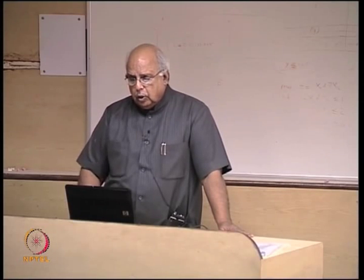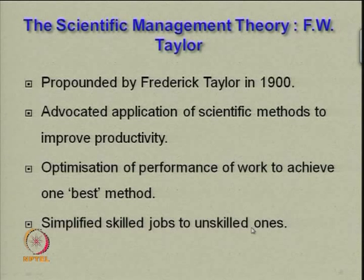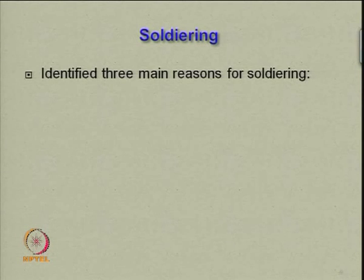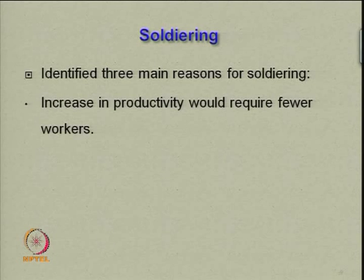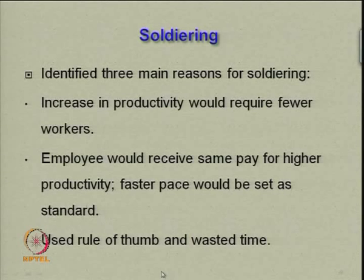The scientific theory of Frederick Taylor simplified skilled jobs to unskilled ones — 'you do this for the best result, you will do as directed.' He identified three main reasons for soldiering: increase in productivity would require fewer workers, employees would receive the same pay for higher productivity, and faster pace would be set as standard. He used rule of thumb and noted that wasted time was not desirable.